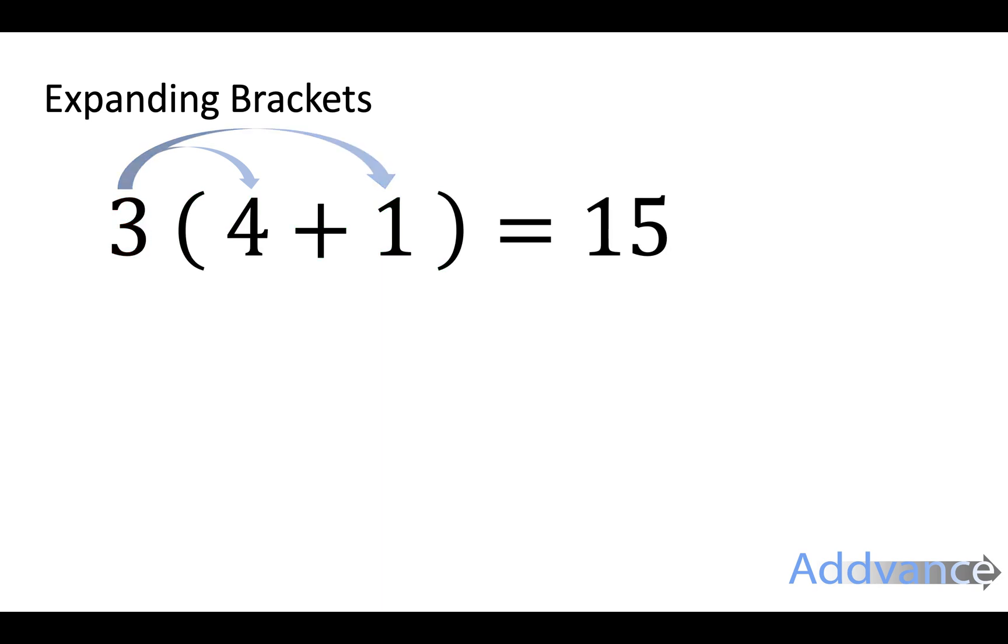Now what I'm showing you there is that to multiply a bracket by something, you have to multiply everything in the bracket by everything outside. So the 4 and the 1 are both inside the bracket and they both have to be multiplied by the 3. And that's what we do here and that's how we get 12 plus 3 which is 15.